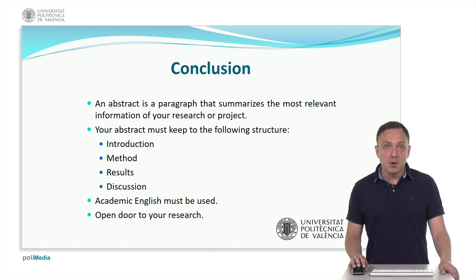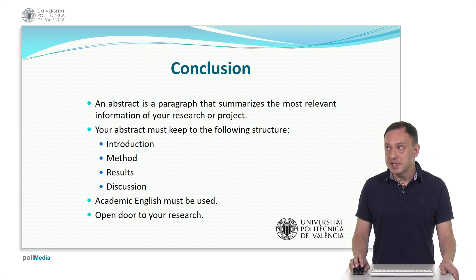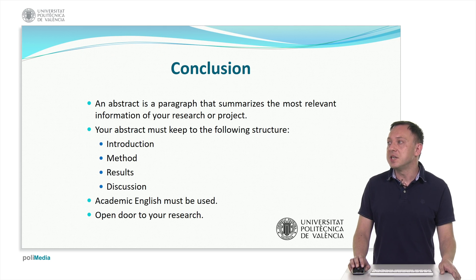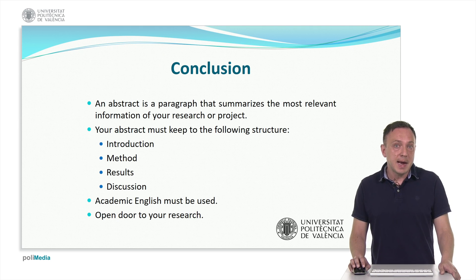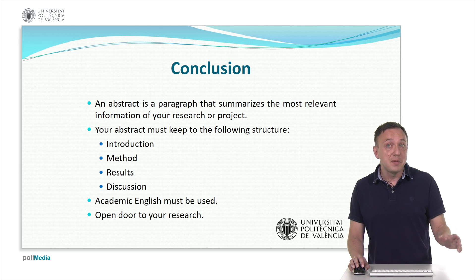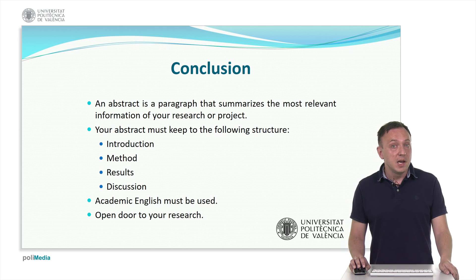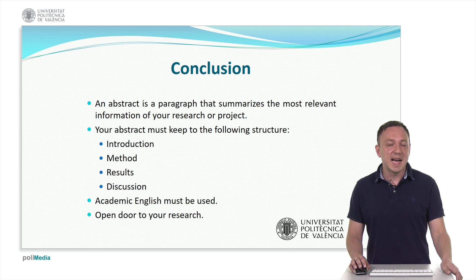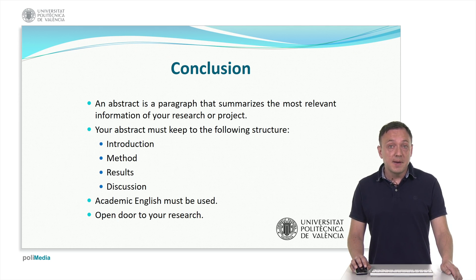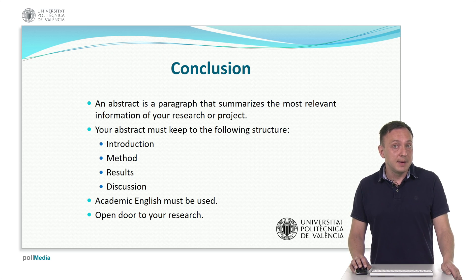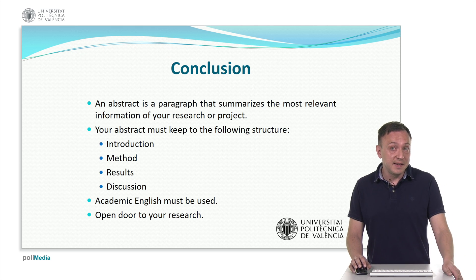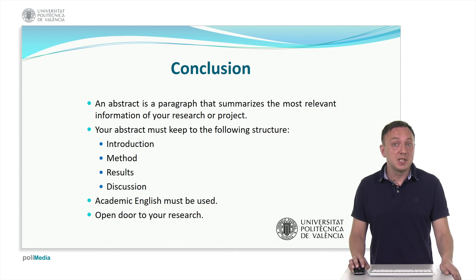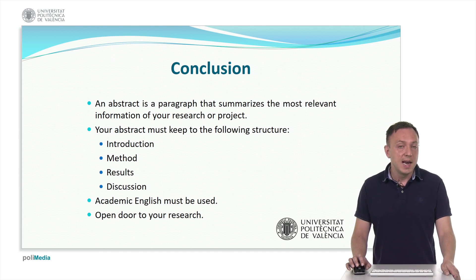In conclusion, in this video we have learned that an abstract is a paragraph that summarizes the most relevant information of your research or project. An abstract follows a defined structure: the introduction, method, results, and discussion. If it is a formal piece of writing, you should use appropriate academic English so as not to compromise its academic rigor. And remember, other people will decide to read your work depending on what you say in the abstract — and that's the ultimate goal of any academic work.